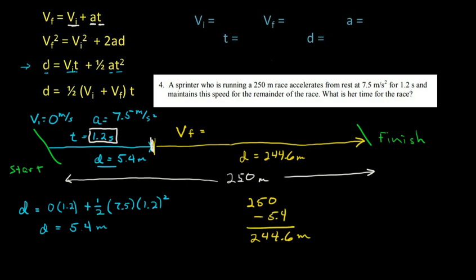So I'm going to go, let's change it to yellow. I guess I can use this space here. So final velocity is going to be equal to initial velocity, which is 0, plus 7.5 is the acceleration, times the time, which was 1.2. And your final velocity should be 9 meters per second.